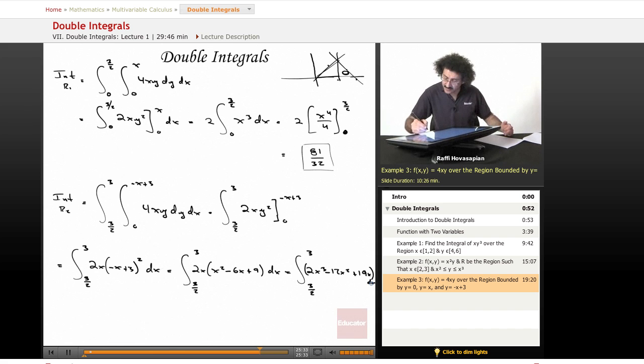And when I go ahead and evaluate that, I used mathematical software to evaluate that, I ended up with 243 over 32.